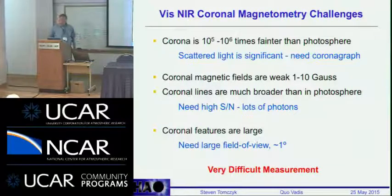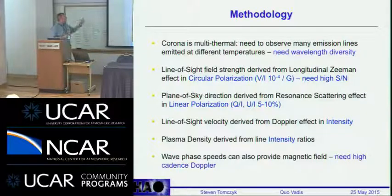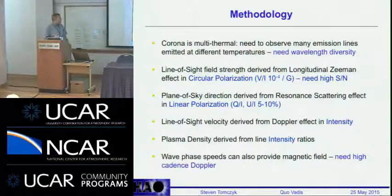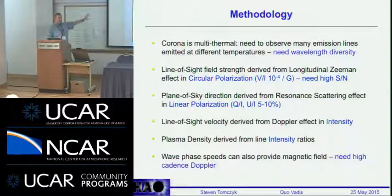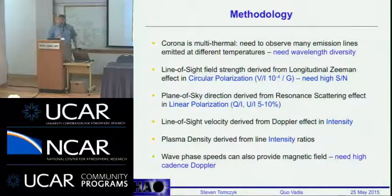We want to have a large field of view because coronal structures are very large, and we want a synoptic instrument. What do we want to observe? Everything — temperature, density, intensity, circular polarization for the Zeeman effect and line-of-sight magnetic field, linear polarization for the plane-of-sky direction, and Doppler to see plasma motions. MHD seismology is a very important complement to polarization measurement because it tells us about the magnetic field, which determines the phase speed of wave propagation. We need very high temporal cadence to measure MHD waves.